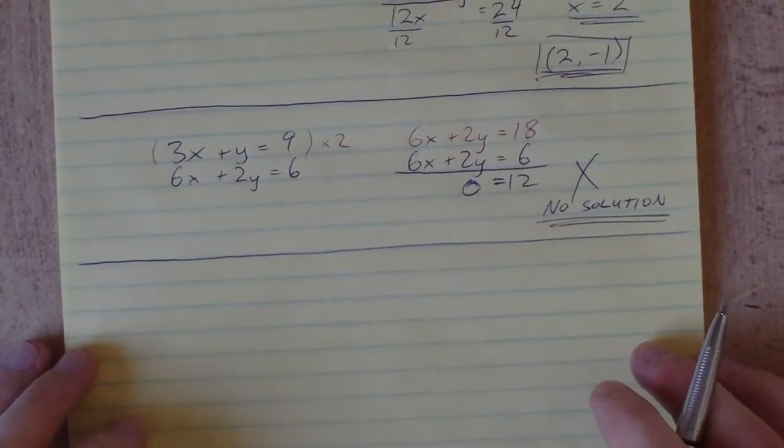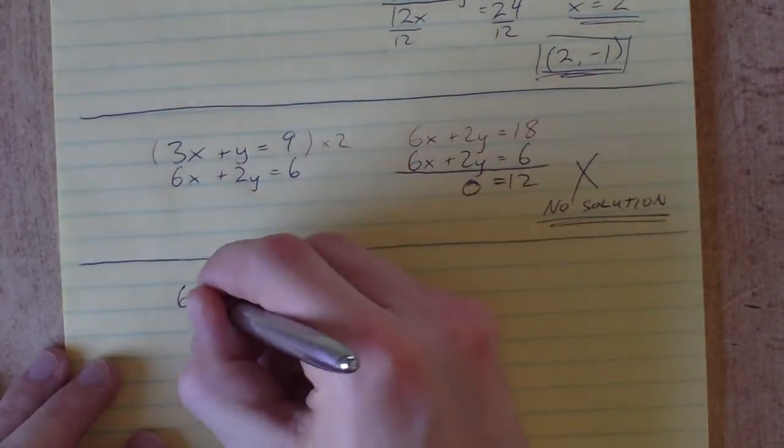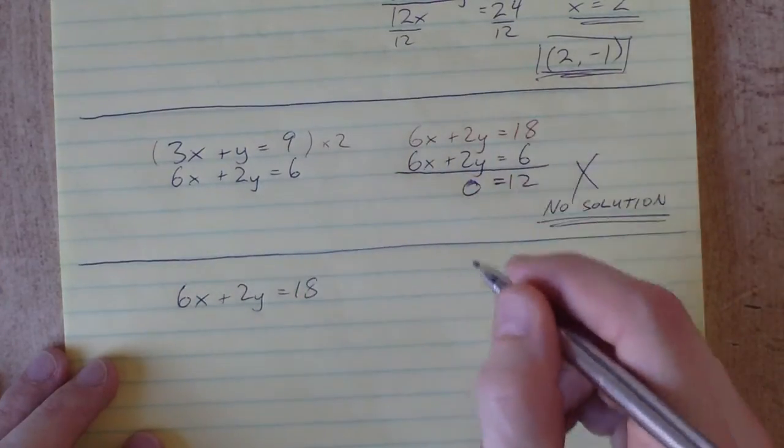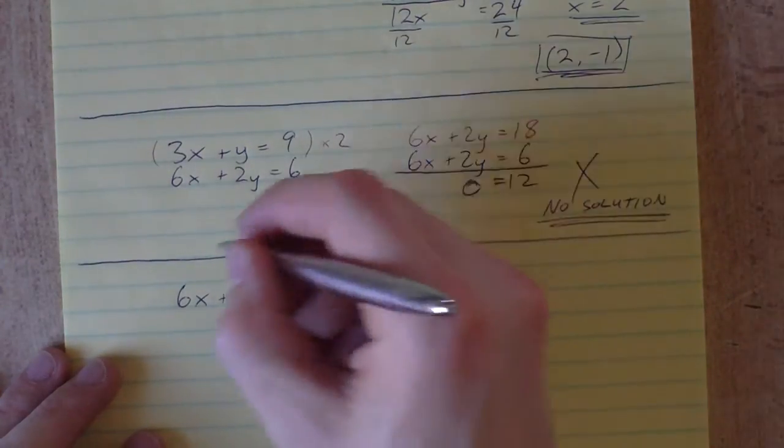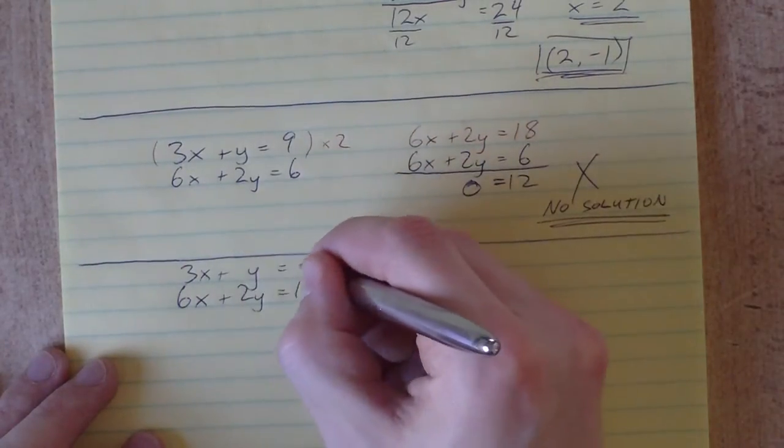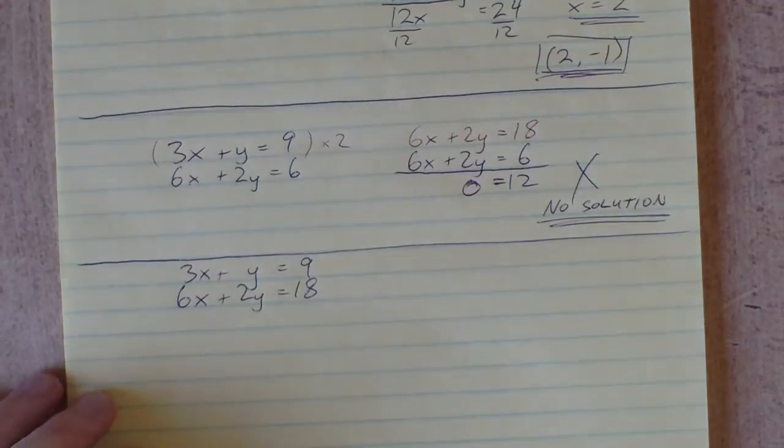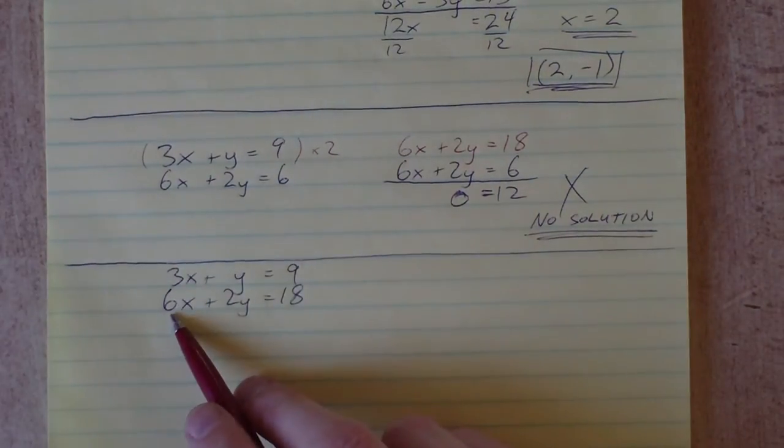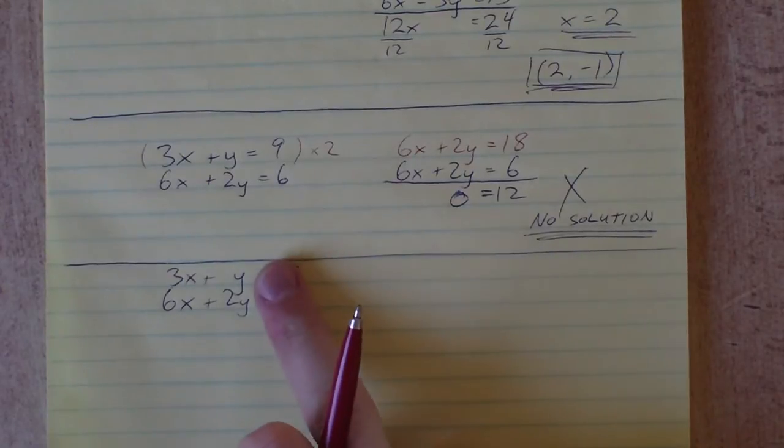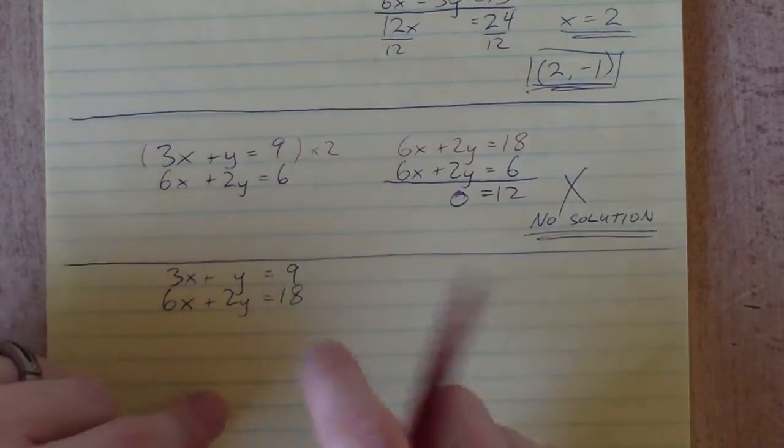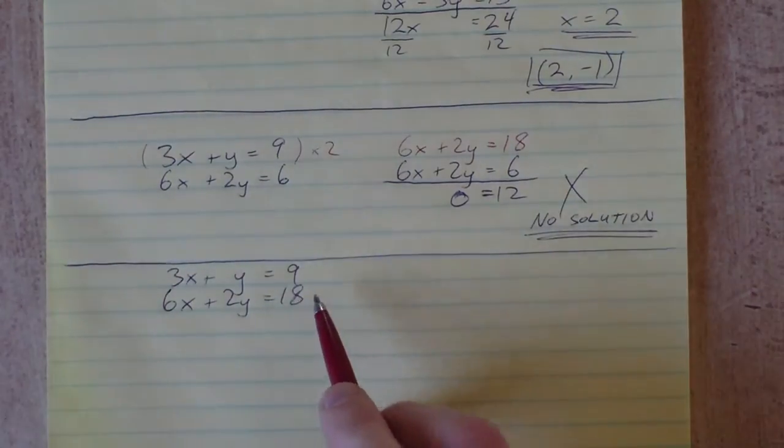The last possibility: 6x plus 2y equals 18 and 3x plus y equals 9. Let's try to eliminate the x's again. We start with 3x plus y and 6x plus 2y, but our numbers are slightly different. Now we have 9 and 18.